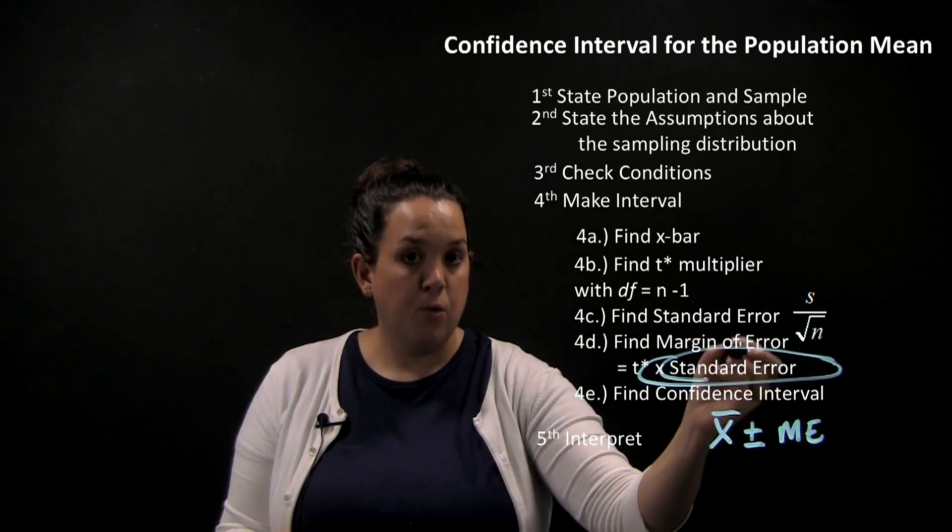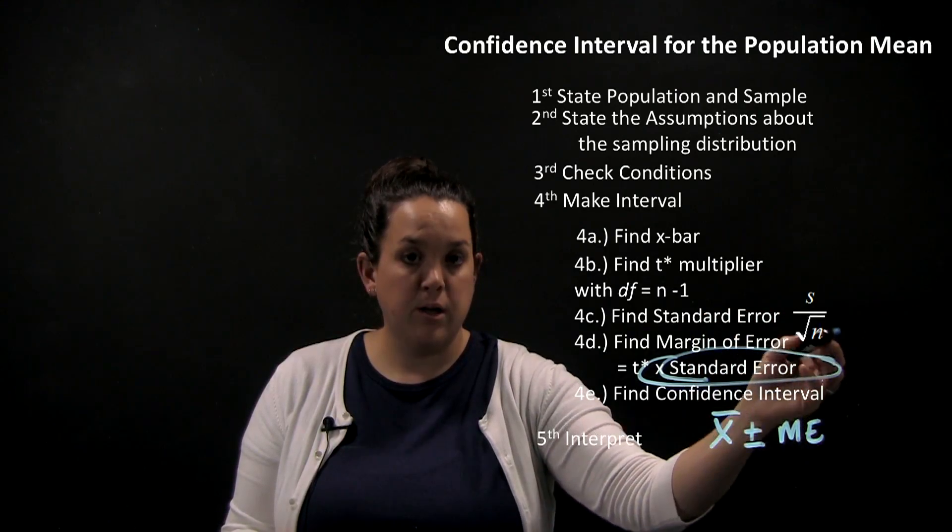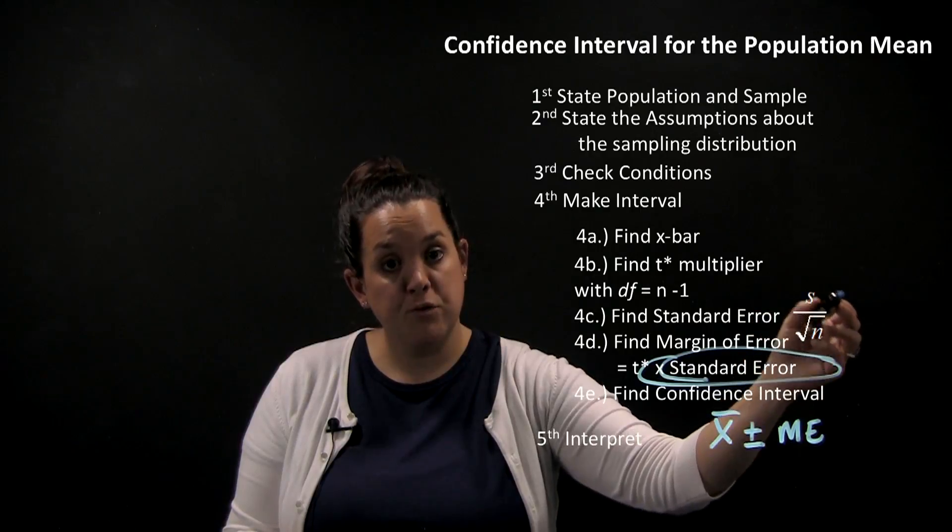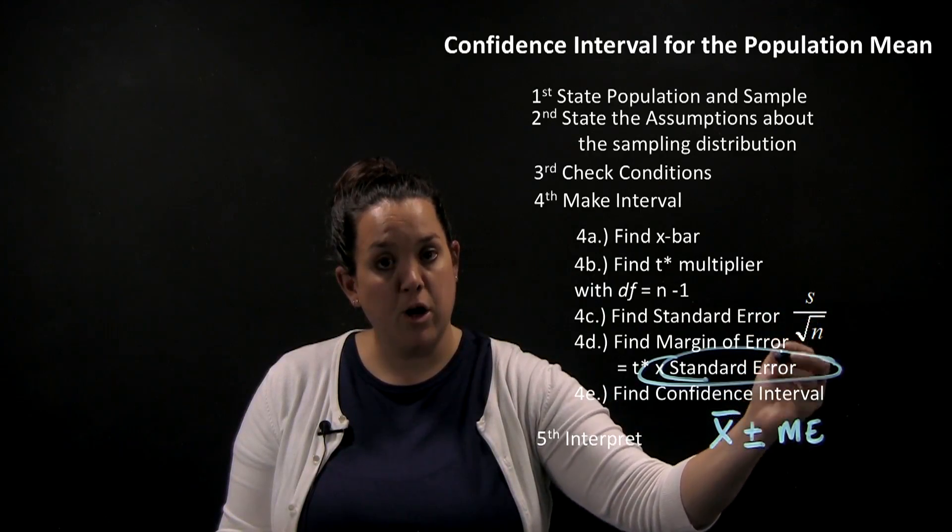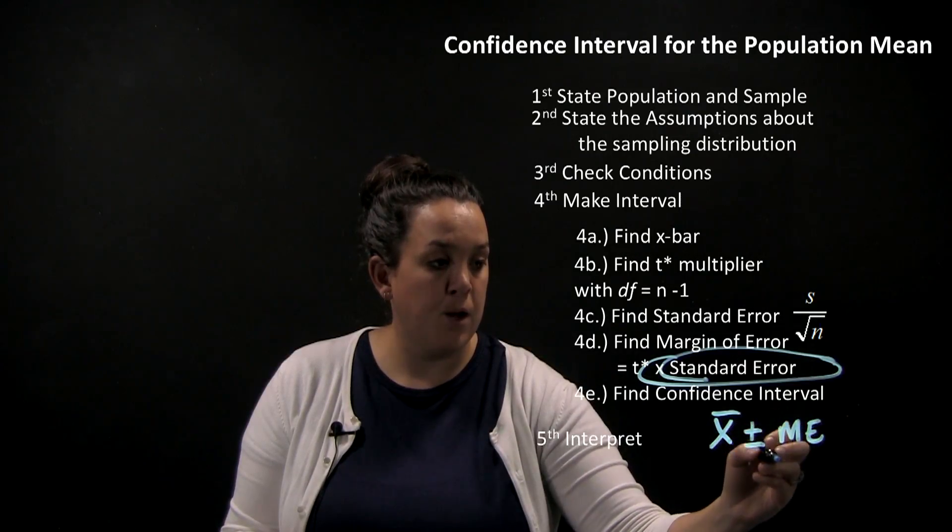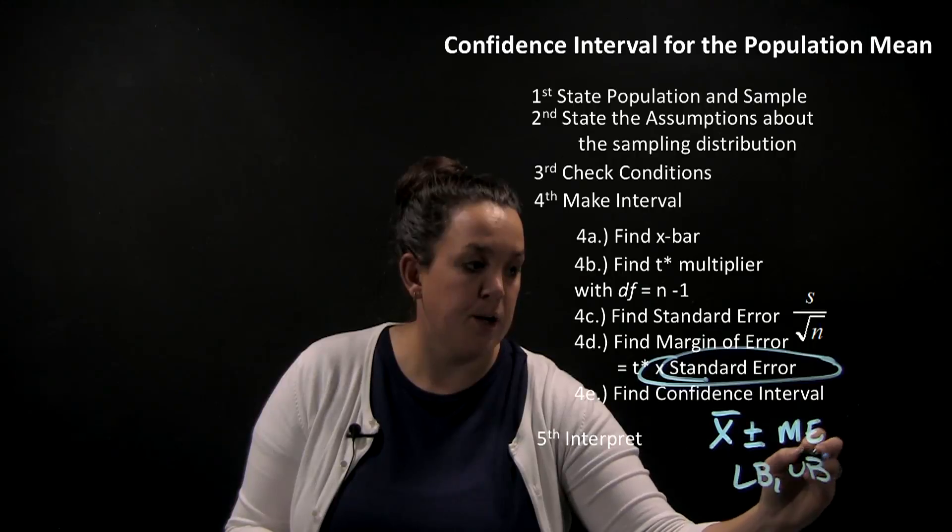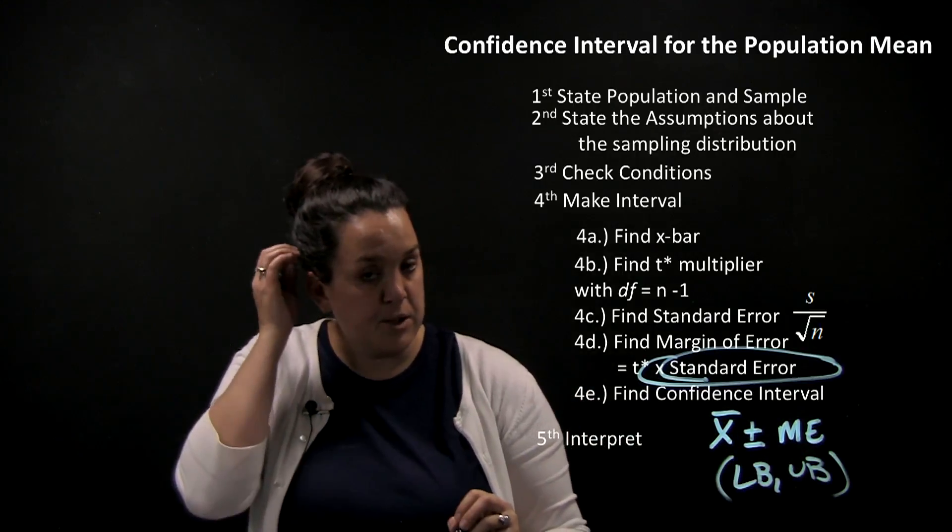To go through that process for calculating the confidence interval, we need x-bar, we need the t-star multiplier which is part of that margin of error calculation, and the last part of that margin of error calculation will be standard error. After we find that, we'll calculate margin of error, and then we'll add and subtract to get a lower bound and an upper bound. That will be our confidence interval for mu.